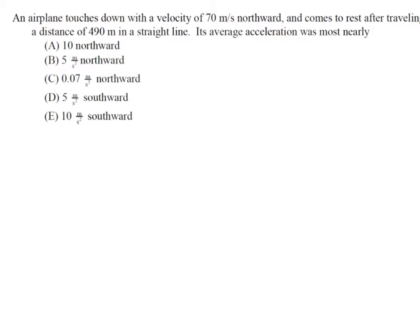An airplane touches down with a velocity of 70 meters per second northward and comes to rest after traveling a distance of 490 meters in a straight line. Its average acceleration was most nearly, with five answer choices.